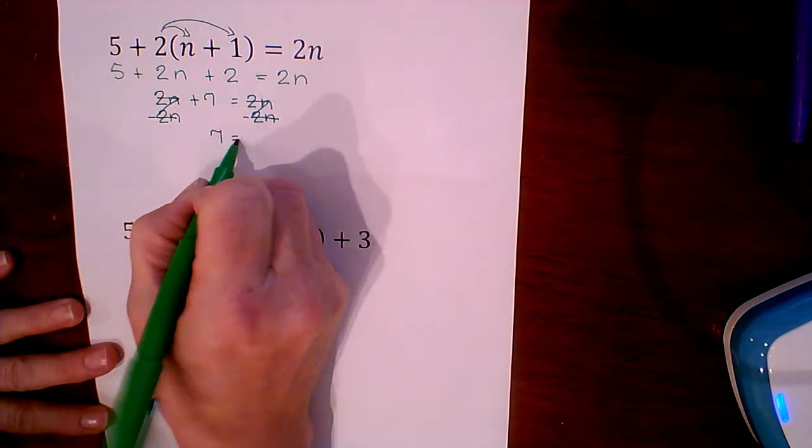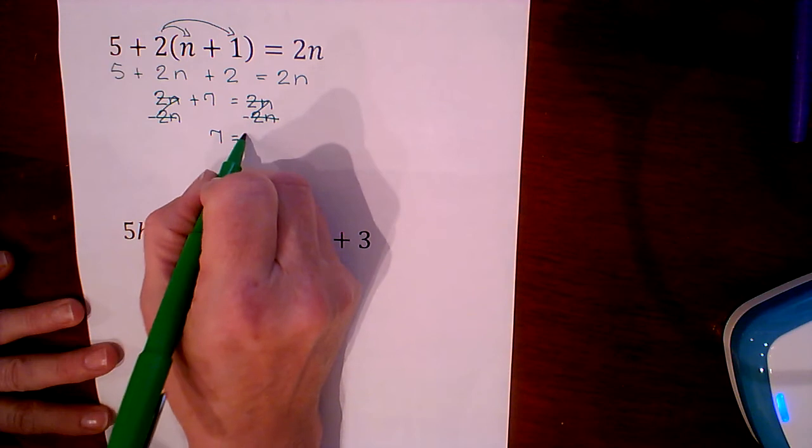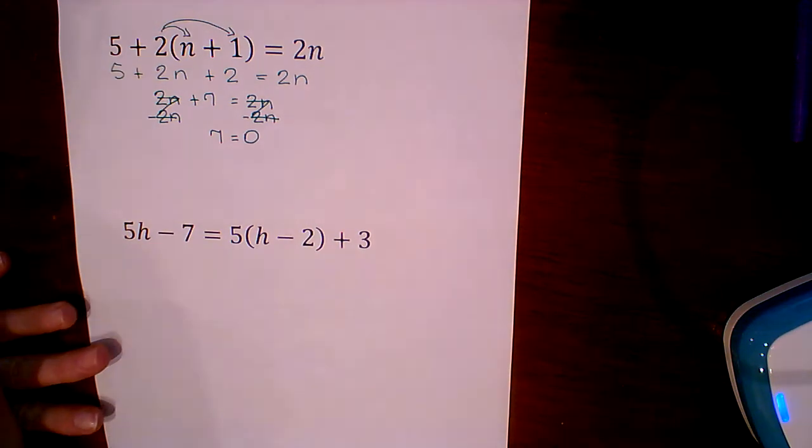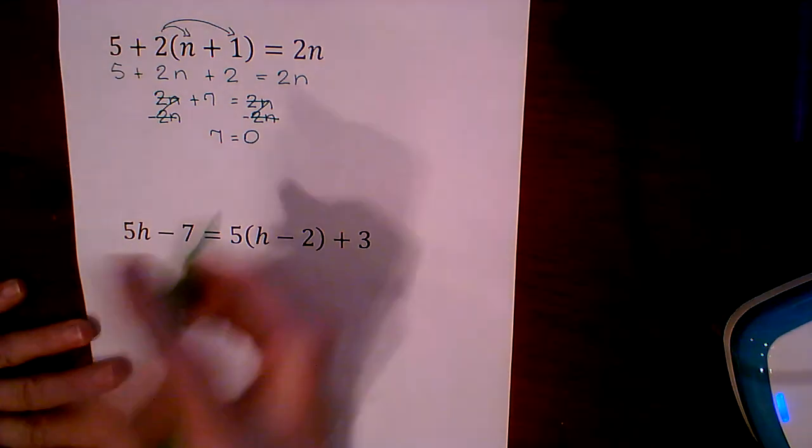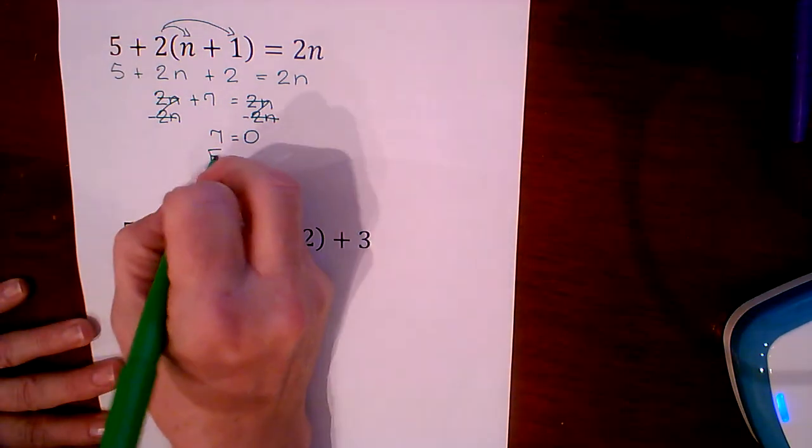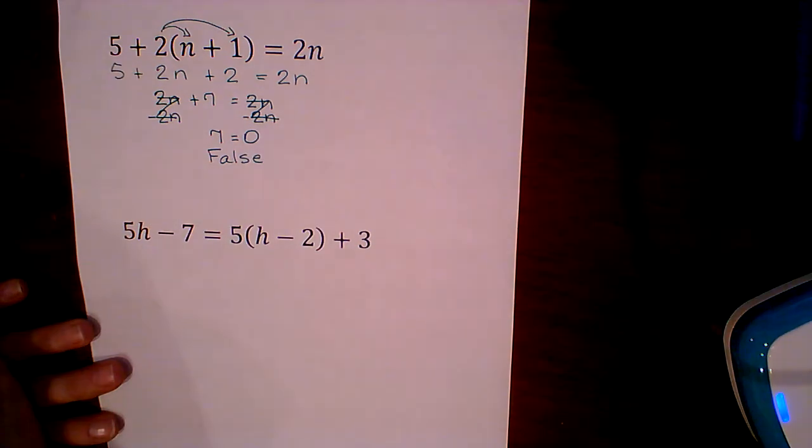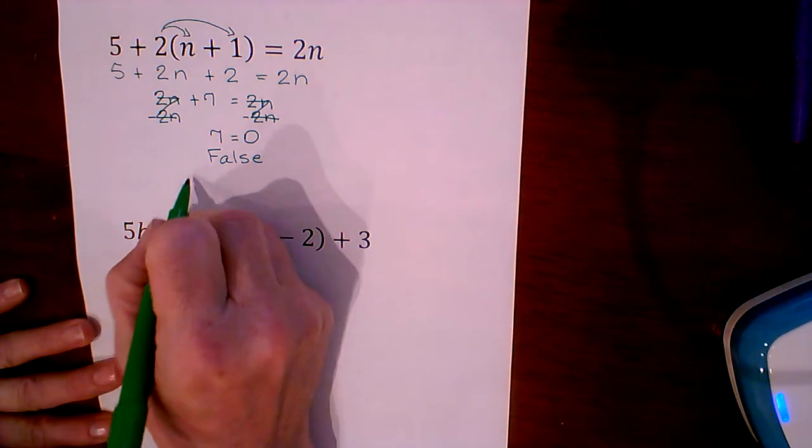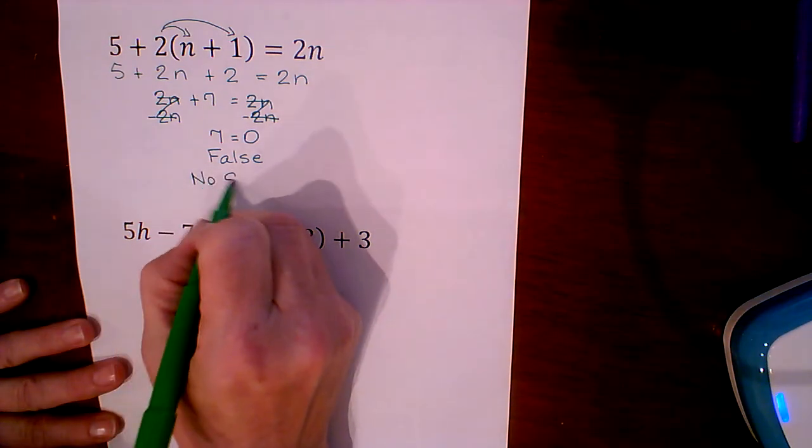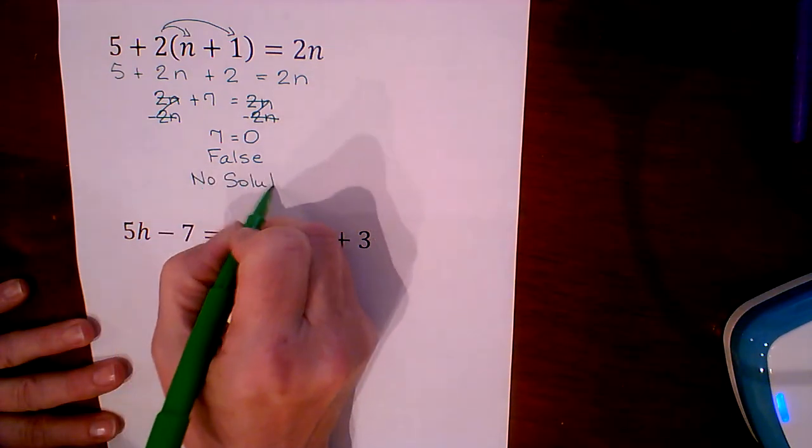So we're going to end up with this statement that says 7 equals 0. The variable has disappeared. We have this statement that is false, and because it is false, that means that there is no value of n that will make the equation true. So this is a case of no solution.